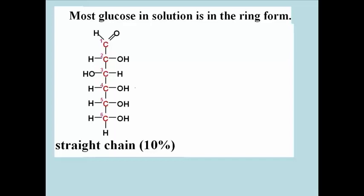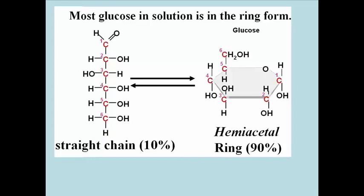In fact, the straight chain glucose is unstable in solution and quickly forms a ring structure called the hemiacetal structure shown on the right. At equilibrium, 90% of the dissolved glucose is in this form.